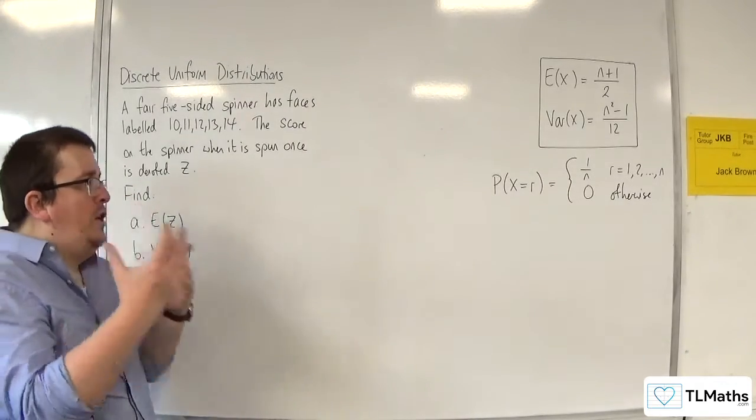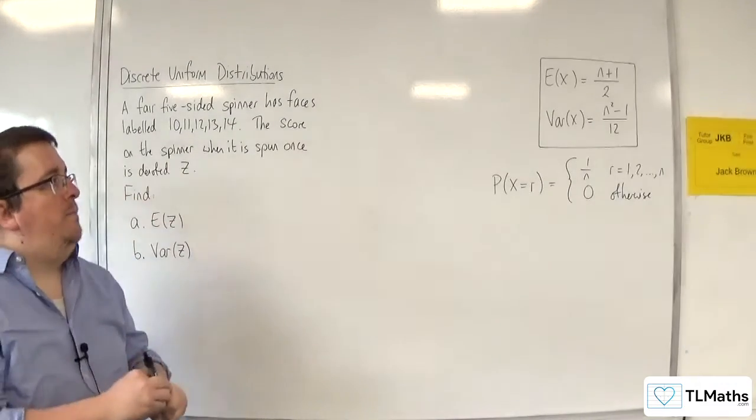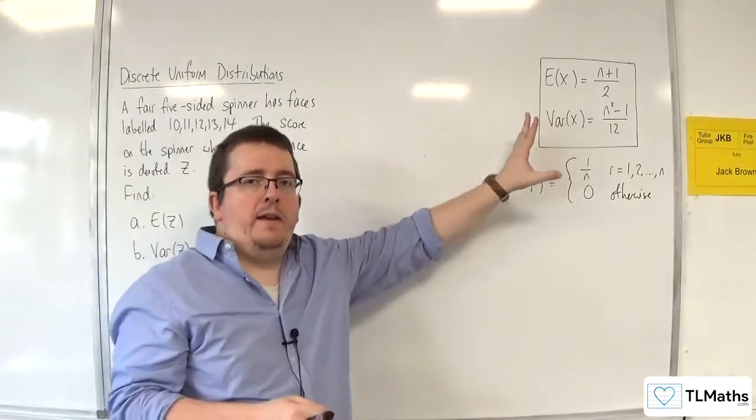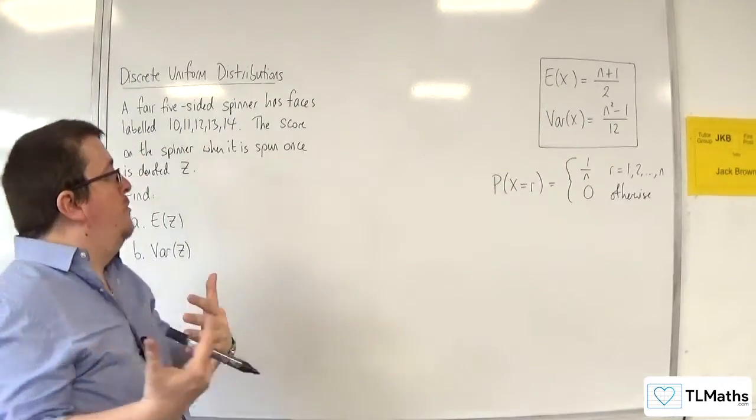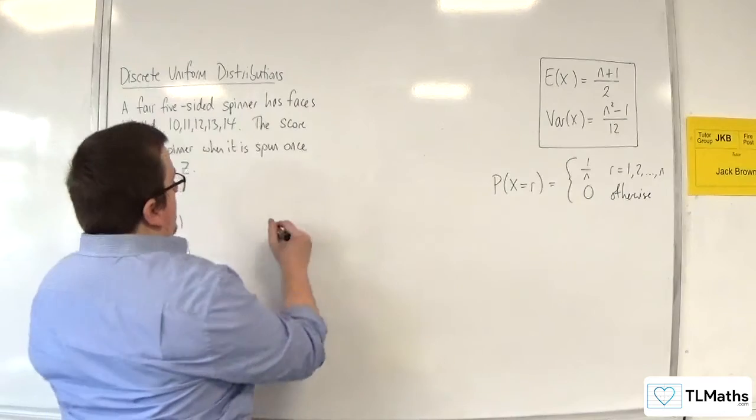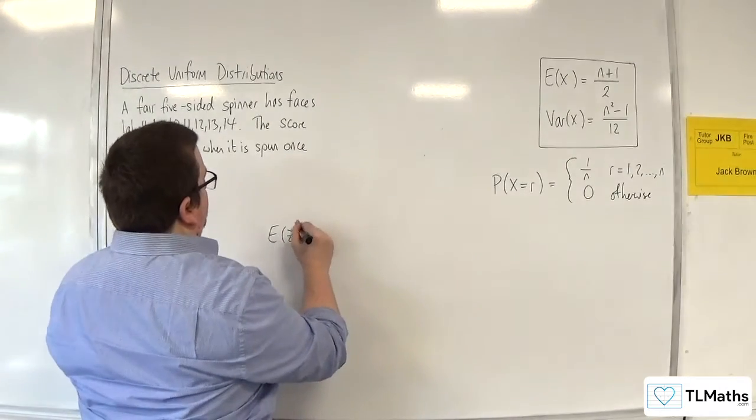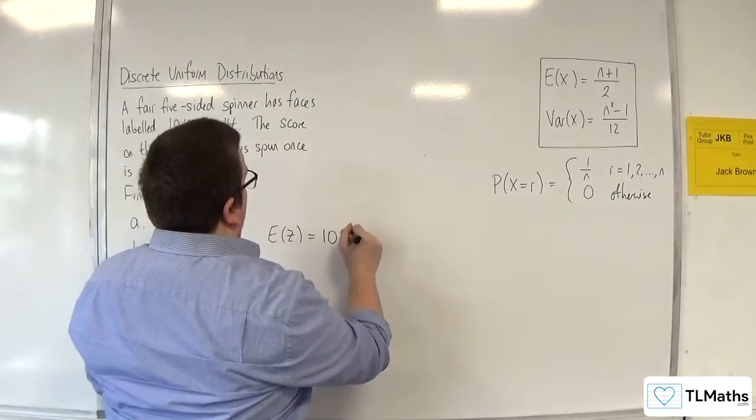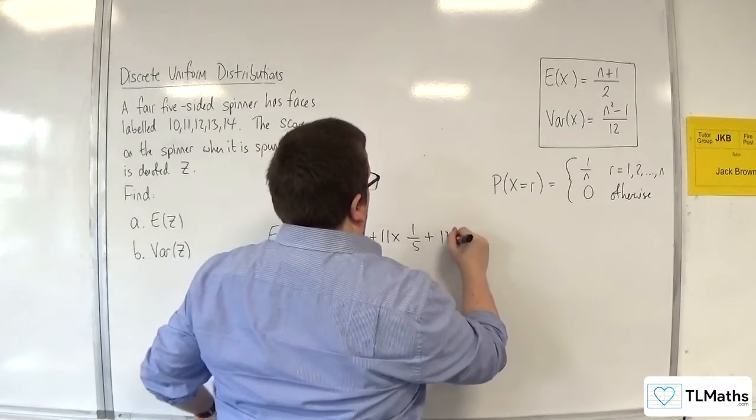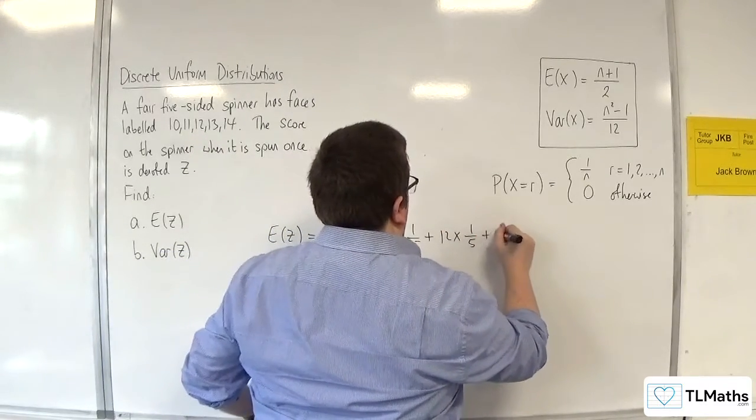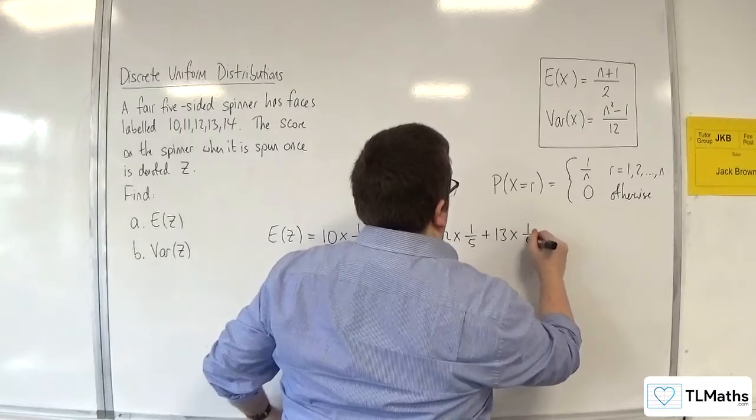Now, we could completely scratch all that and then use the methods that we learnt in the previous section for discrete random variables. So we could say, E of z is going to be 10 times 1 over 5 plus 11 times 1 over 5 plus 12 times 1 over 5 plus 13 times 1 over 5.